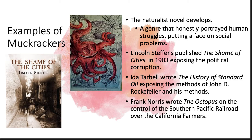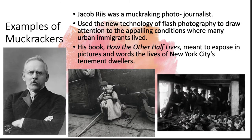Frank Norris writes another naturalist novel called 'The Octopus,' which is about the Southern Pacific Railroad. He depicts it as an octopus because they had a hand in everything — they controlled every aspect of the country, especially having control over California farmers. Think back to political cartoons describing big business monopolies with tentacles holding onto everything. Frank Norris takes that image to the next level in his naturalist novel.